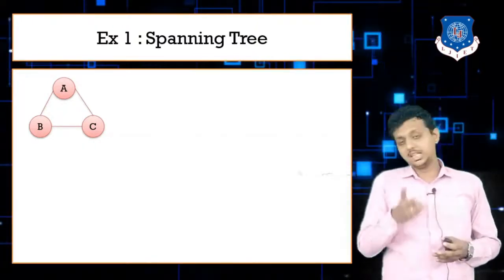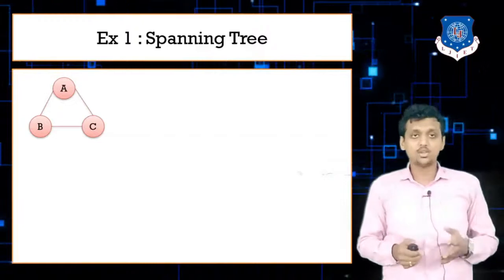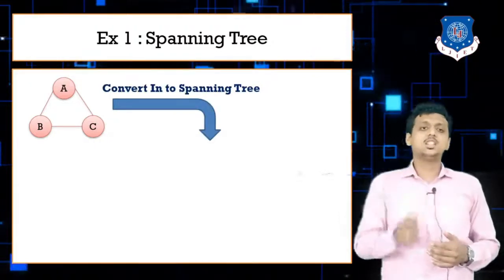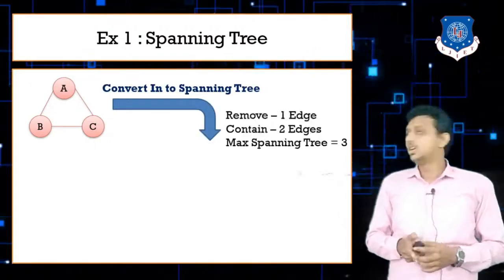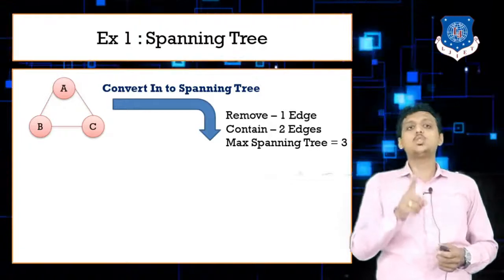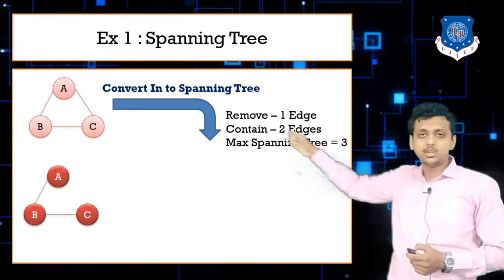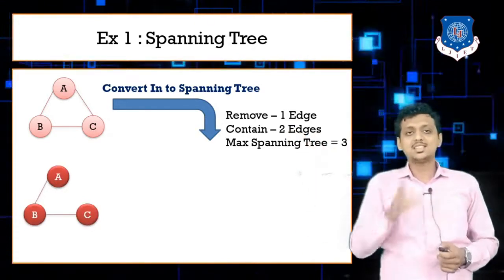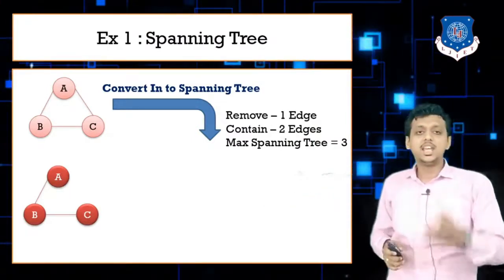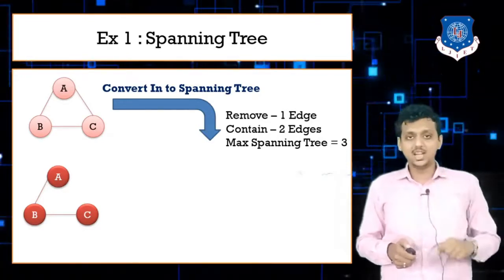The graph contains 3 vertices and 3 edges. It has nodes A, B, C — an undirected graph. To convert this graph into the spanning tree, you can remove 1 edge so that only 2 edges remain, making sure all nodes are connected. I am removing 1 edge, that is AC. So A, B, C is now a spanning tree — it contains 2 edges as per the rule.